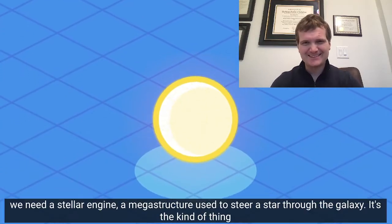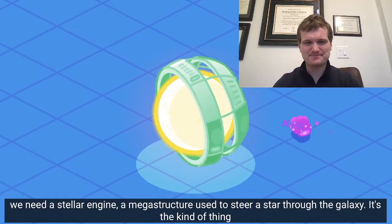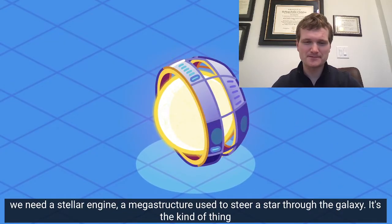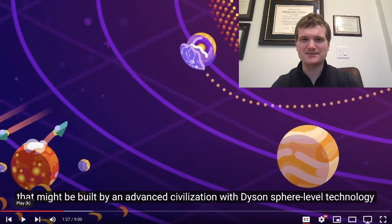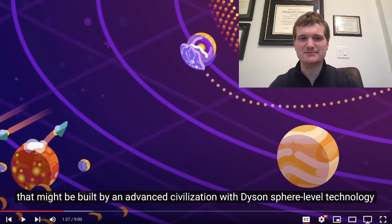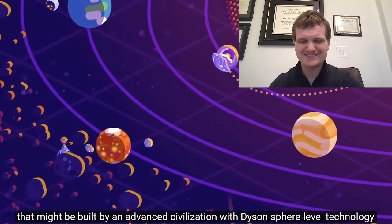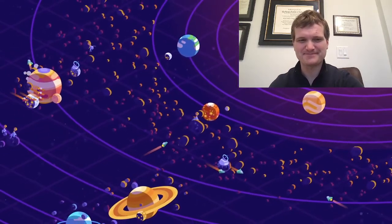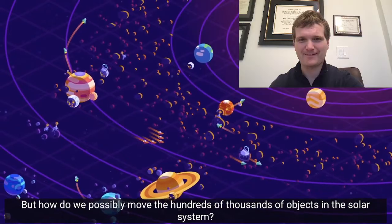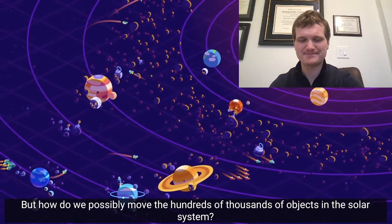To move the solar system, we need a stellar engine. A megastructure used to steer a star through the galaxy. It's the kind of thing that might be built by an advanced civilization with Dyson Sphere-level technology that's thinking about their future millions of years ahead of time.